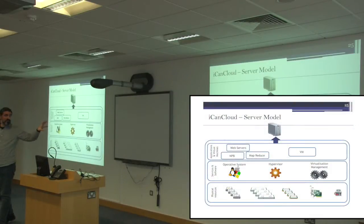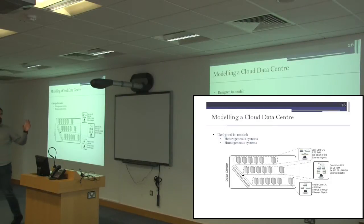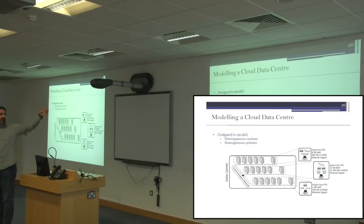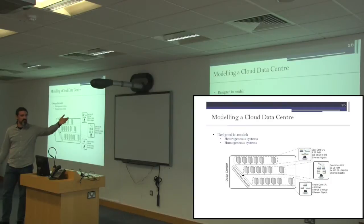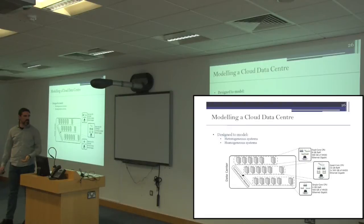Once we have all those components, we can build a server, and with servers we can build a homogeneous or heterogeneous data center. Using INET, in this example figure there are three rows, each representing a different type of server: the first has dual cores, 8 GB of RAM, and one or two hard disk drives; another has four CPUs and two hard disk drives. It's possible to combine them and create different types of cloud data centers.